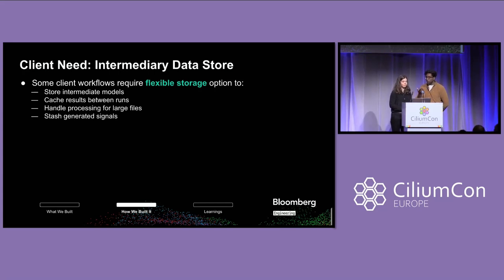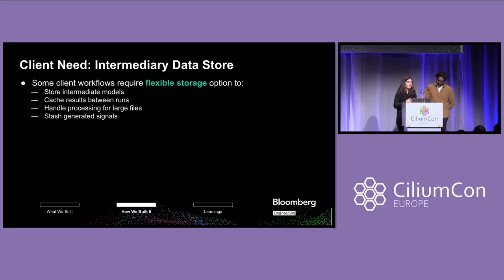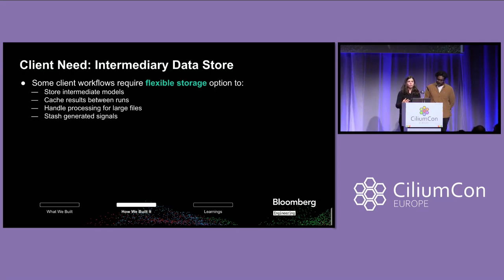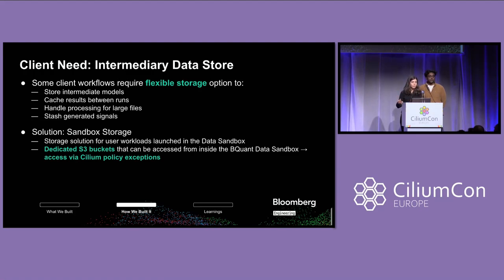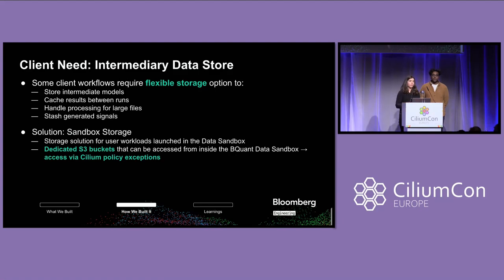We built on the capabilities of the data sandbox to build intermediary data storage. We found that some of our clients had workflows that required flexible storage — from storing intermediate models to handling cache results between runs of jobs, handling processing for really large files, or stashing generated signals. So what we built on top of this functionality was what we call sandbox storage: dedicated S3 buckets that can be accessed from within the BQuant sandbox, with access coming from exceptions in our Cilium policy and through integration with cloud identity federation.